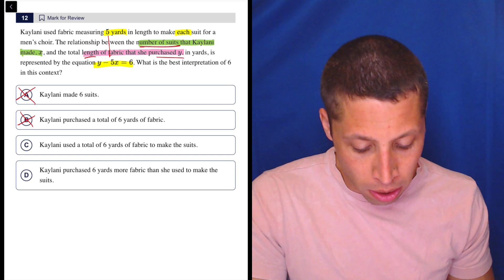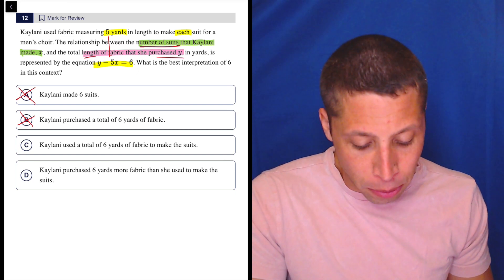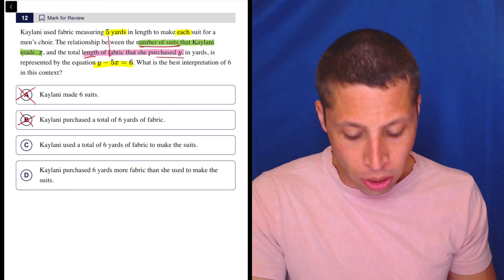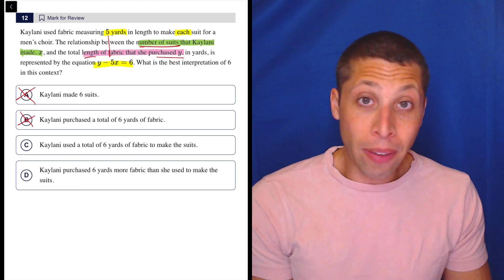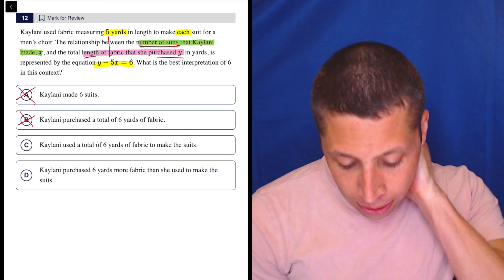C: Kalani used a total of six yards of fabric to make the suits. Well that's closer but let's look at D. Kalani purchased six yards more fabric than she used to make the suits.